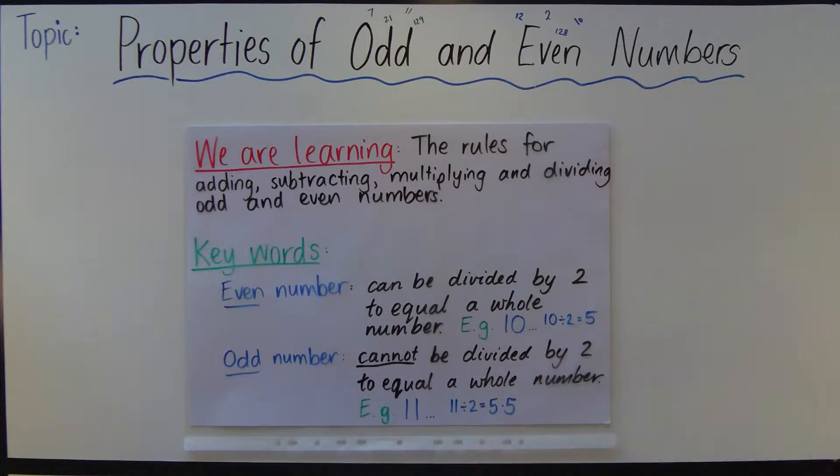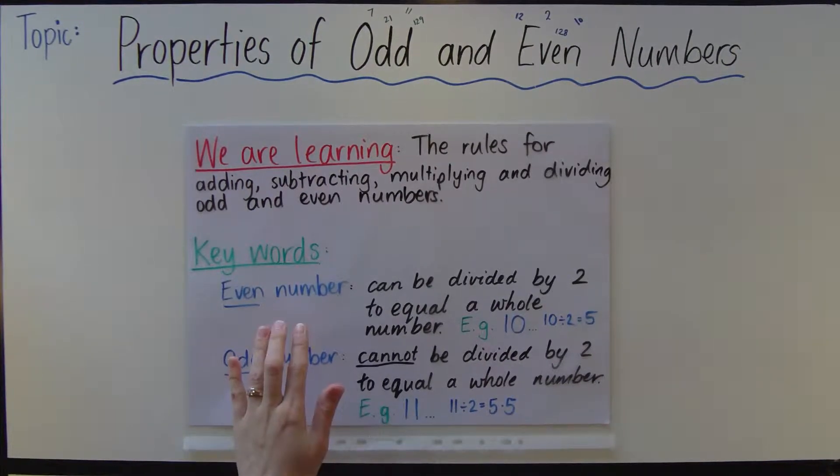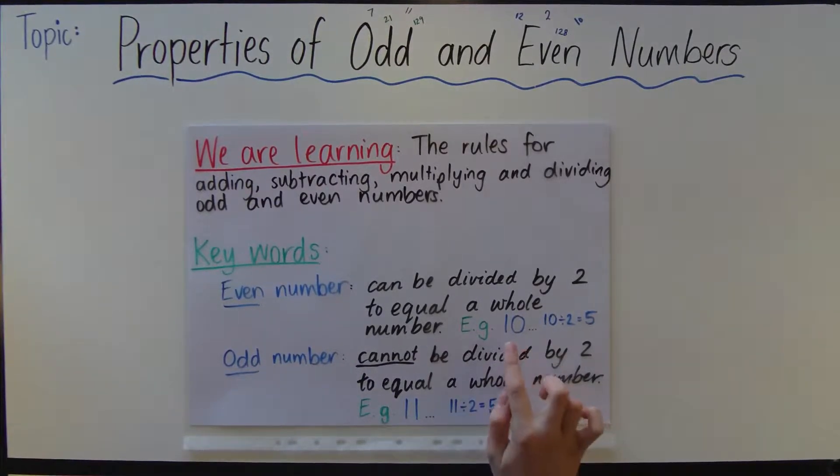Today we're going to start off with looking at some key words. We're looking at the even number, what an even number is. I know this is a bit of revision, but it's always good to do that with maths. An even number can be divided by 2 to equal a whole number. An example would be 10. 10 is an even number because when you divide it by 2 it equals 5, which is a whole number.